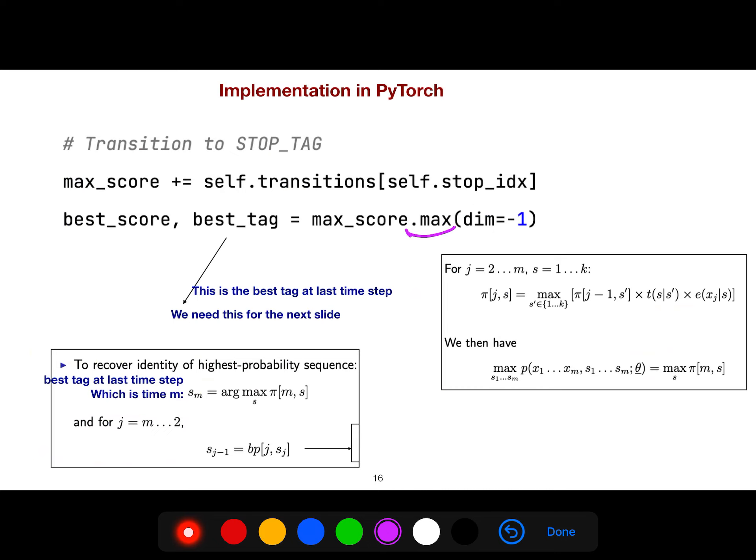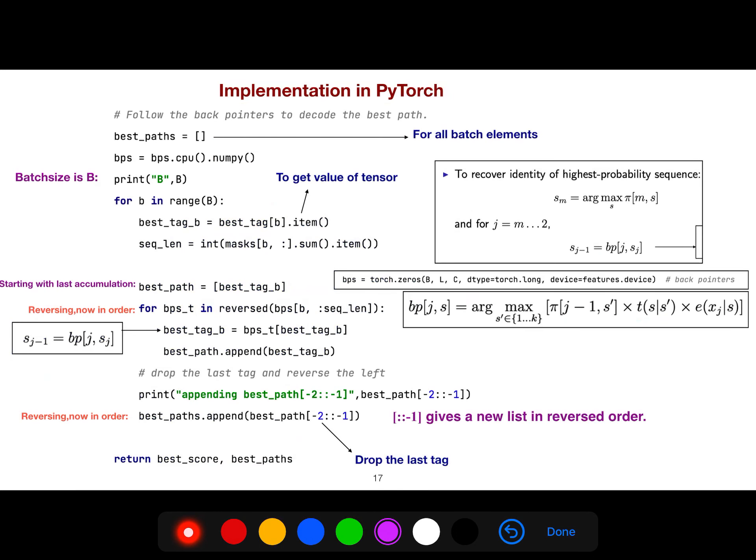This is the best tag. This one is the best tag at last time step. This was the data structure that you need. The recursion law, you go from P, J minus 1 and S prime to P, J and Pi, J and S. To recover identity of highest probability, you just need to know this S is back pointer of J and S.